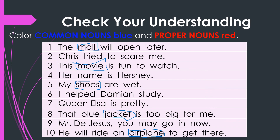Now let us use a red marker and look for proper nouns. In the first sentence, we have no proper nouns. But in the second sentence, we have the word Chris, which should be marked red. In the fourth sentence, mark the word Hershey red. In the sixth sentence, mark Damien red. In the seventh sentence, mark Queen Elsa red. In the ninth sentence, mark Mr. De Jesus red. As you can see, if the proper noun is made up of two or more words, the first letter of each word should be capitalized as well.